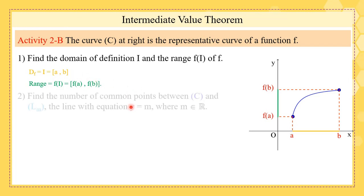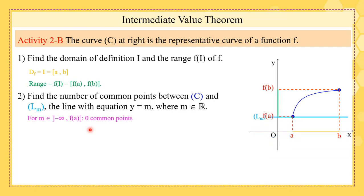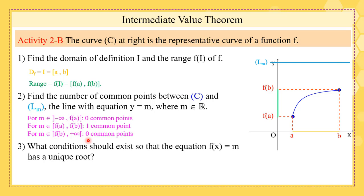Now find the number of common points between curve C and line Lm. Below f(a) we have no common points; from f(a) to f(b) we have exactly one common point; from f(b) open to plus infinity, zero common points. For the equation f(x) = m to have a unique root, f should be continuous, strictly monotonic, and m must belong to f(I).